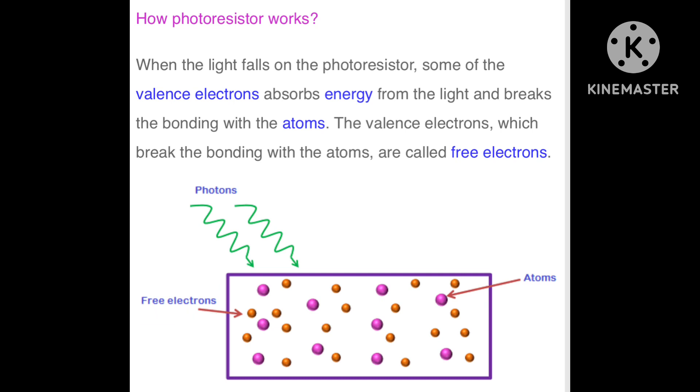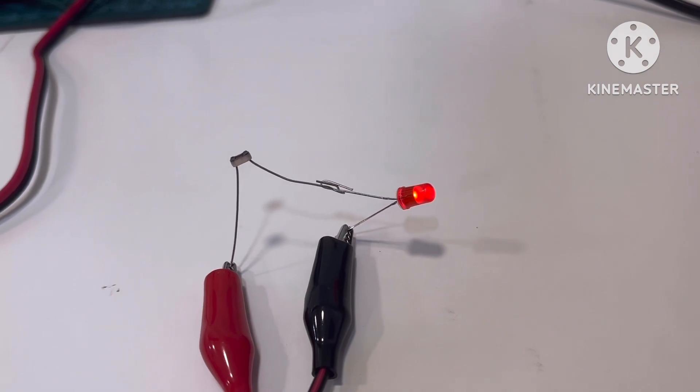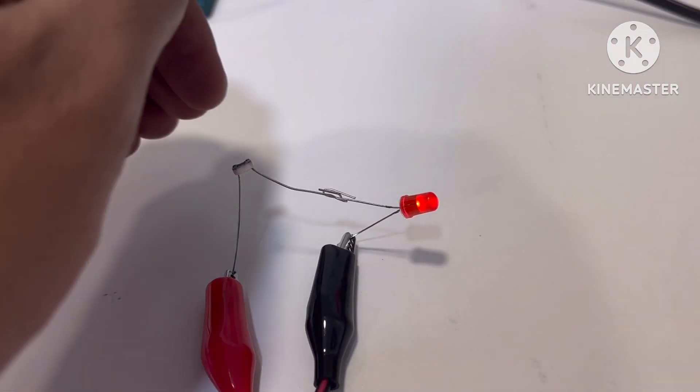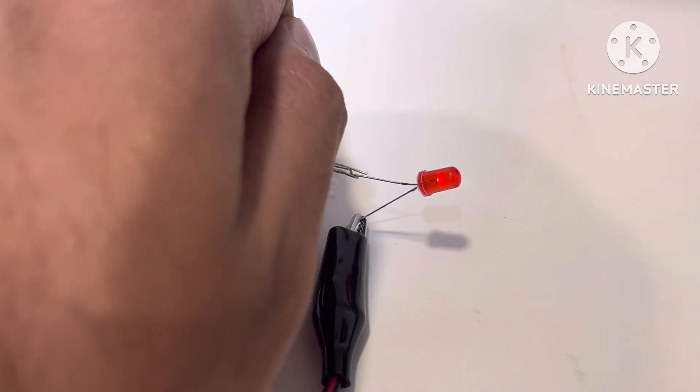These free electrons are responsible for the flow of current. So more light means more free electrons, and more free electrons means more flow of electrons or current.